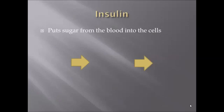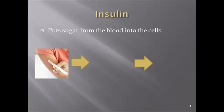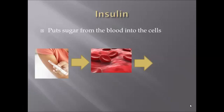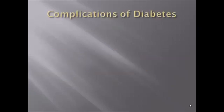To summarize: in type 1, the body doesn't produce insulin, while in type 2, the body has resistance. The role of insulin is simply to put sugar from the bloodstream into the body's cells. Here's a quick animation showing a patient giving themselves insulin, which causes glucose present in the bloodstream to go into the cell. The role of insulin plays an important part in some complications of diabetes.